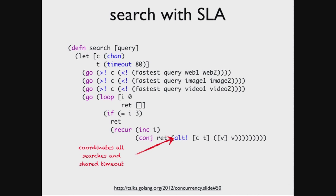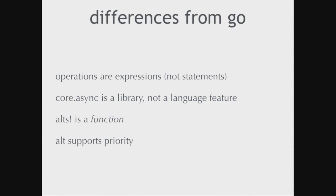There are a couple of interesting differences between Clojure's implementation of CSP and Go's implementation. Go implements CSP as a language feature — the operators in Go are statements, actually part of the language. Clojure implements them as expressions in a library, which means you can metaprogram against it, reflect against it, it's data — you can manipulate it in all the same ways you know and love about working in a list language. Also, alt in Clojure supports priority: if multiple channels come in near-simultaneously, you can prioritize taking one over another.